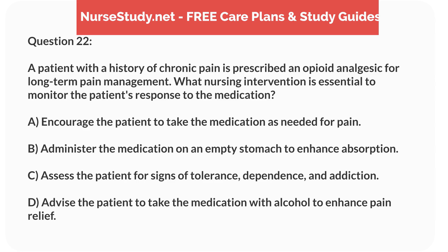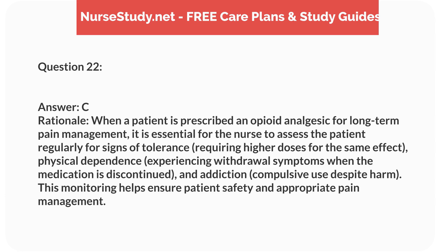Question 22. A patient with a history of chronic pain is prescribed an opioid analgesic for long-term pain management. What nursing intervention is essential to monitor the patient's response to the medication? Answer: C. It is essential for the nurse to assess the patient regularly for signs of tolerance (requiring higher doses for the same effect), physical dependence (experiencing withdrawal symptoms when the medication is discontinued), and addiction (compulsive use despite harm). This monitoring helps ensure the patient's safety and appropriate pain management.